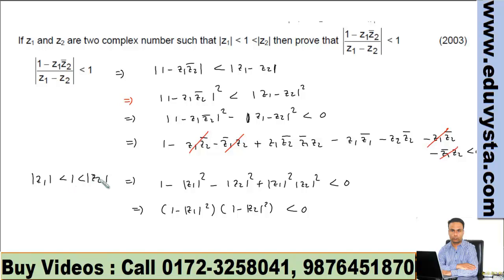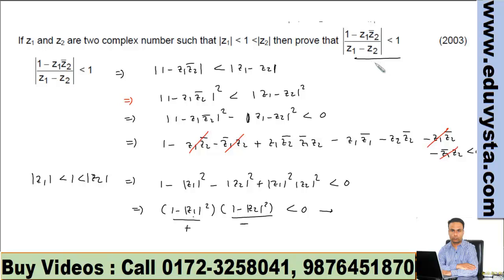Now, from the given conditions: mod z1 is less than 1 and mod z2 is greater than 1. Since mod z1 is less than 1, the factor (1 minus mod z1 squared) is positive. Since mod z2 is greater than 1, the factor (1 minus mod z2 squared) is negative. The product of a positive and a negative value is negative, so this expression is indeed less than 0, which is true. Hence the result is proved.